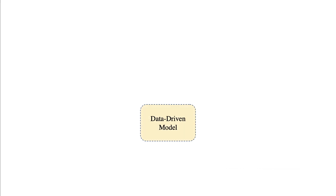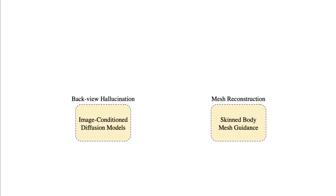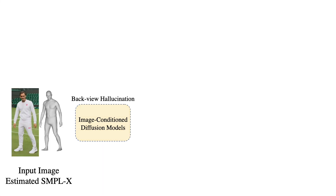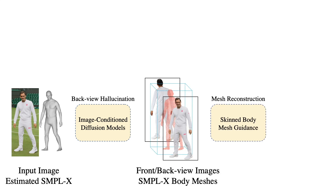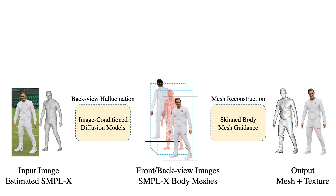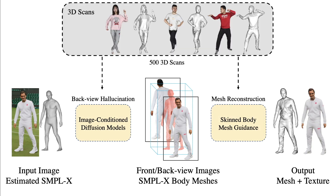To address these challenges, we propose a two-stage pipeline, decomposing the problem into hallucination and reconstruction subproblems. For hallucination, we harness the generative capabilities of diffusion models to infer unobserved back-view appearances from the input images. For reconstruction, we utilize a skinned body mesh, providing essential 3D guidance for accurate human mesh reconstruction. This decomposition strategy allows our pipeline to be trained efficiently with just 500 3D scans, while still robustly handling unseen images.